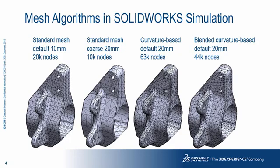Also, the blended curvature algorithm generates a smaller number of nodes than the curvature mesher, even though the overall mesh distribution looks quite similar.